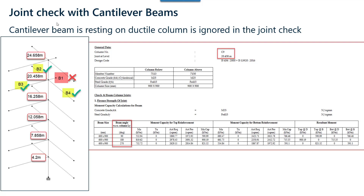In this case, beam B1 at 20.458 meters is a cantilever beam. Checking the report, the beam at 0 degrees of column L-Y has been ignored, and the other beams P2, P3 and P4 at 90, 180 and 270 degrees are being considered while performing the joint checks.